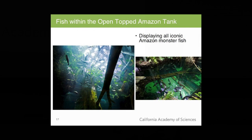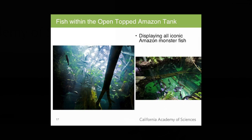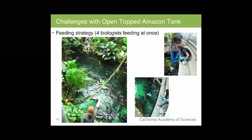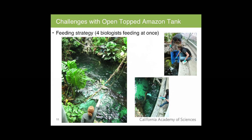Our next goal involves the open-topped Amazon tank. The desire was to display all the iconic Amazon monster fish, which looks great but comes with various challenges. One is feeding strategy. This is an amazing event that occurs two to three times a week, set up with four biologists. One biologist — the big fish feeder — source-feeds all the arapaima and arowana, target-feeding each of them herring, pieces of fish, and prawns. A second feeder throws what we call the Pacu Fiesta — a fruit mix that keeps the pacu occupied in the middle of the tank.